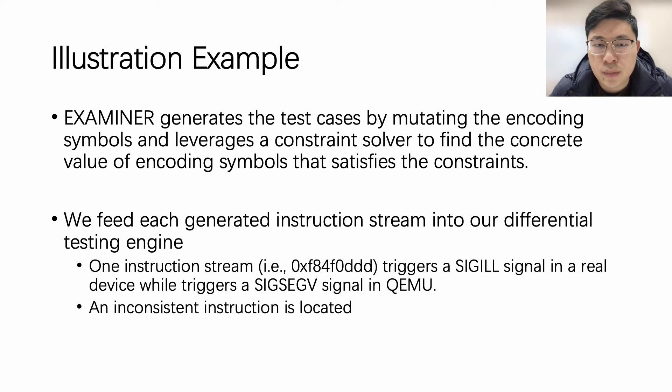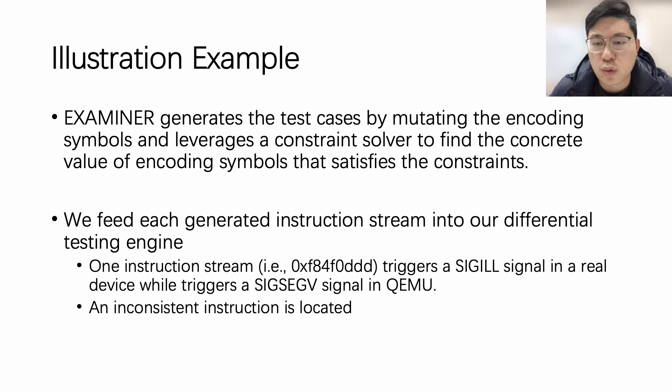Examiner generates test cases by mutating the encoding symbols and leverages a constraint solver to find concrete values that satisfy the constraints in the ASL code. We then feed the instruction stream to the differential testing engine. We noticed that one instruction stream, 0xF84F0DDD, will trigger a SIGILL signal in real devices but trigger a SIGSEGV signal in QEMU. In this case, an inconsistent instruction is located.